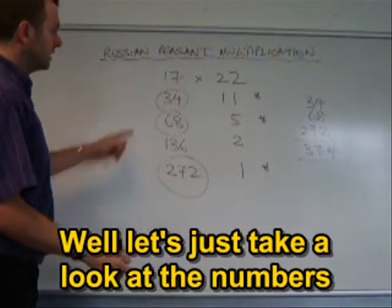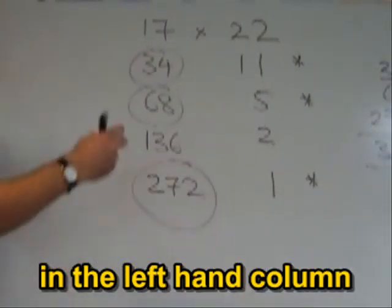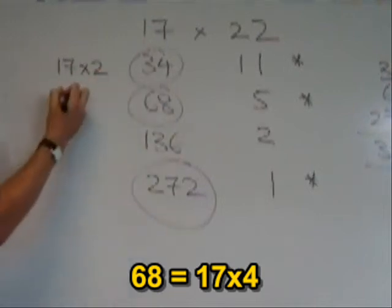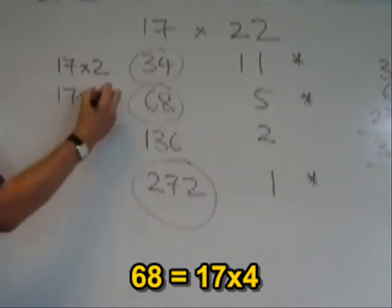Now why does this work? Well, let's just take a look at the numbers in the left-hand column. 34 is 17 times 2. 68, well it's times by 2 again, so it's 17 times 4.